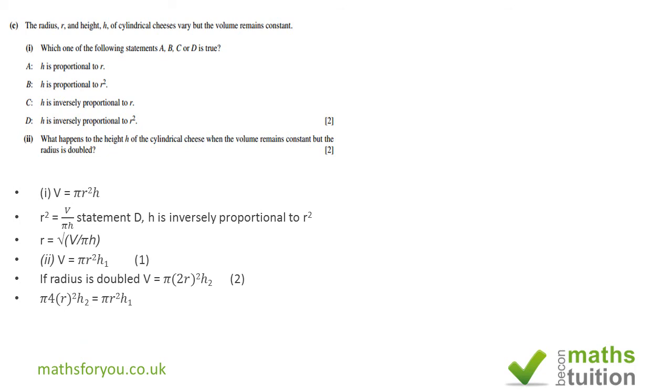We equate both because V is constant. When you square that, 2² = 4, so we've got 4πr²h₂ where h₂ is the new height. This equals πr²h₁.